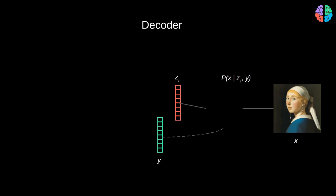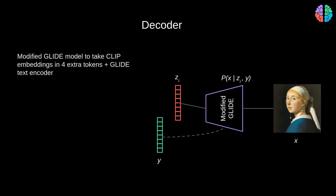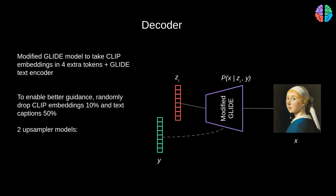The decoder is a diffusion model. More specifically, they use the GLIDE diffusion model that was introduced in 2021 by OpenAI. They modify the GLIDE to take four extra tokens and they combine these tokens along with the text encoder of GLIDE. To help with training, they randomly crop the CLIP embeddings 10% of the time and the text captions 50% of the time. Plus, they use two upsampler models to gradually move from a low resolution of 64 by 64 to higher resolution of 256 by 256, and they use another upsampler model to finally arrive at a resolution of 1024 by 1024. And it is at this resolution that they have presented the results in the paper.